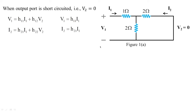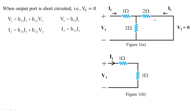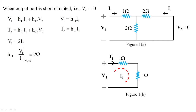With the output port short-circuited, we determine h11 and h21. The two 2-ohm resistors are in parallel, and 2 parallel to 2 gives 1 ohm. Hence Figure 1a simplifies to Figure 1b, where v1 = 2·i1. Therefore h11 = v1/i1 at v2 = 0, which equals 2 ohms.